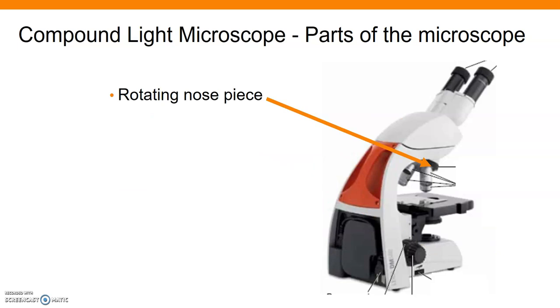The other parts of the microscope include the rotating part that is going to hold the objective. This is called a nose piece and it does rotate. These objectives here will rotate so you can move them around so you can focus on different magnifications.